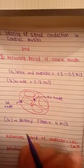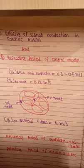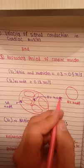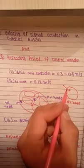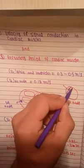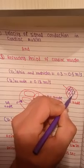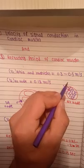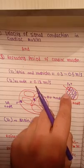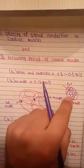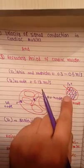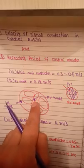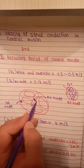Through the AV node, the velocity is 0.1 meters per second. Why is the velocity of conduction through the AV node slow? First, in the AV node, the cells are oriented at a right angle — 90 degrees — to the direction of conduction, so the impulse cannot easily pass with great speed. Second, the gap junctions between the cells of the AV node are sparse, which is why conduction is slow.